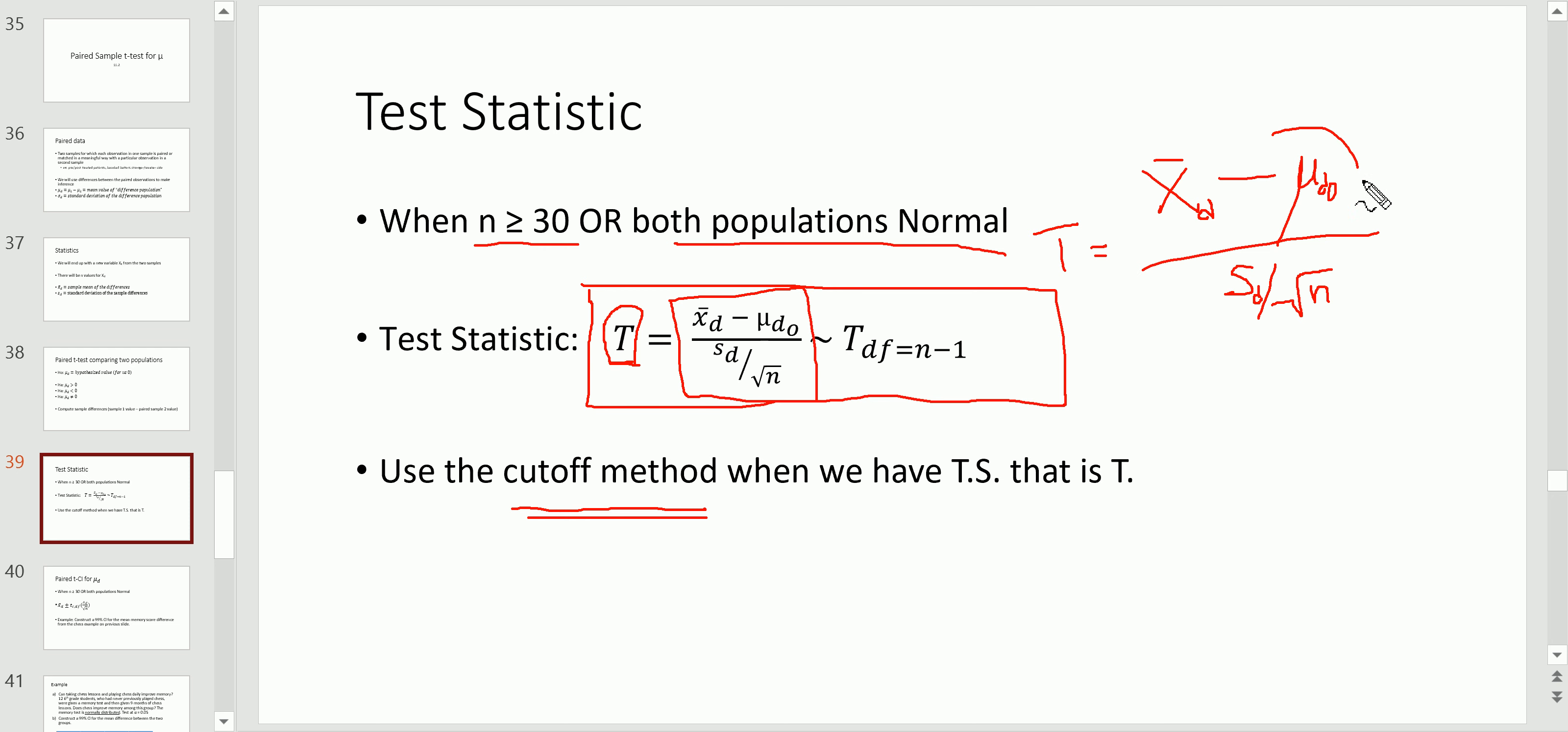And of course, this is the null value. So this is going to be zero for us, of course, right, because H_0 was that mu_D equals zero. This will follow a T distribution with degrees of freedom n minus one when this is satisfied. And we're going to use the cutoff method.